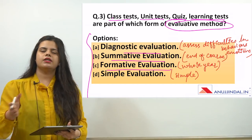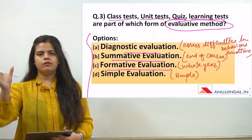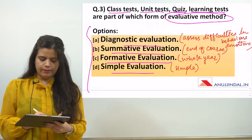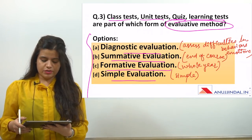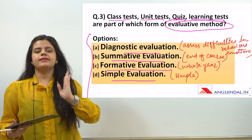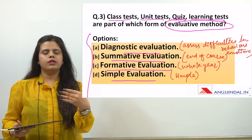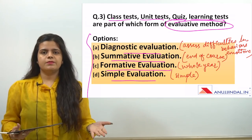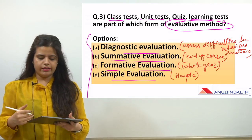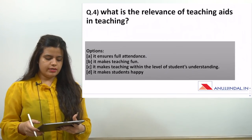Summative evaluation is assessment at the end. The third is formative evaluation — which spans the whole year. The session starts from April to March, going on throughout the whole year. Class test, unit test, quiz, and learning test happen throughout the year in class, so the evaluation going on for the whole year is formative evaluation. That is the answer.